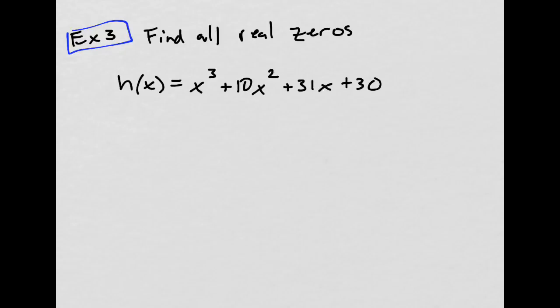Here it says find all real zeros of the function. Well, the first thing, just like we did before, is to set it equal to 0, change the y-value to 0, because we're finding the zeros. That's the same thing as finding x-intercepts.